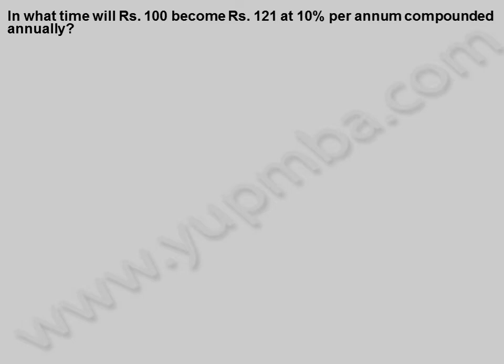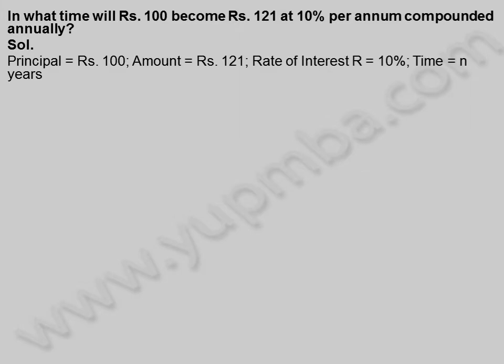In what time will 100 rupees become 121 rupees at 10% per annum compounded annually? Solution: Principle is equal to 100 rupees, amount is equal to 121 rupees, rate of interest r is equal to 10%, time is equal to n years.